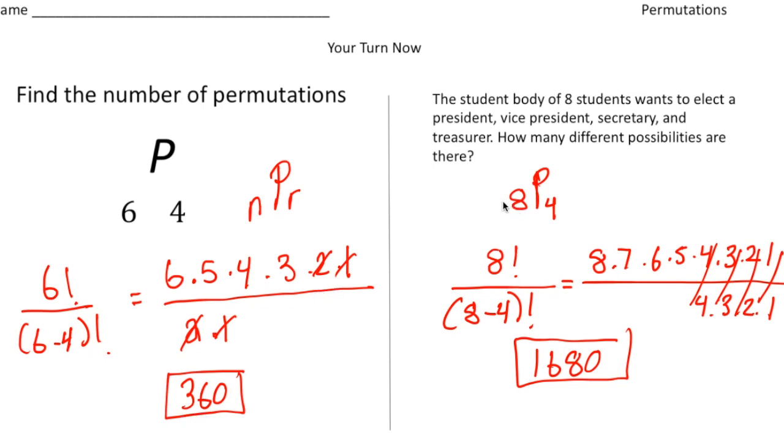Now this one was a little more challenging because you had to set up the expression. It says the student body of eight students wants to elect a president, vice president, secretary, and treasurer. How many different possibilities are there? Well, the n value is eight because there's eight students, and the r value is four because there's four different positions. If you do this right, you should end up with 1,680 different possibilities. So hopefully you did well with these. If you made a mistake, try to find your error. But hopefully now you have a better understanding of what a permutation is and how to calculate it using the formula. Bye bye.